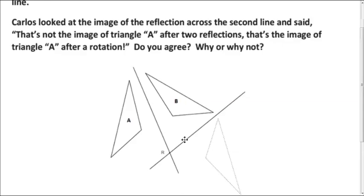and that gives us triangle B. And then we reflect triangle B over this second line and get this dashed triangle. But as student Carlos looks at this and says, hey, this last triangle, that's not from two reflections, that's from a rotation. We just rotated A, is what he's saying. Do you agree?